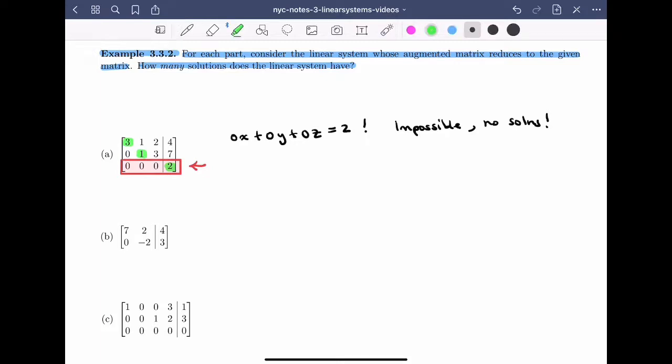Moving on to the second example. Again, I'll look at the leading entries, the 7 and the minus 2. I notice that this system is consistent. There's no leading entry in the column that corresponds to the constants.